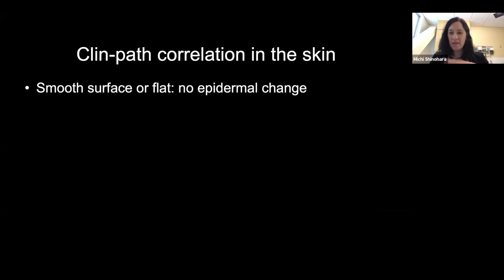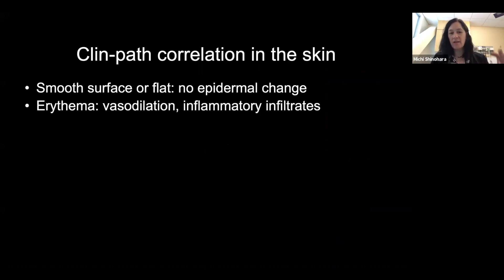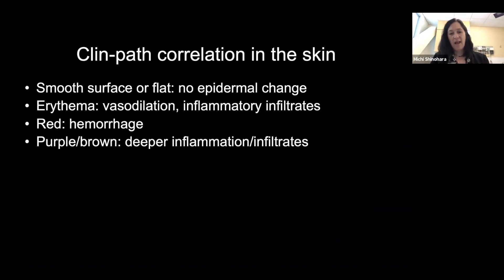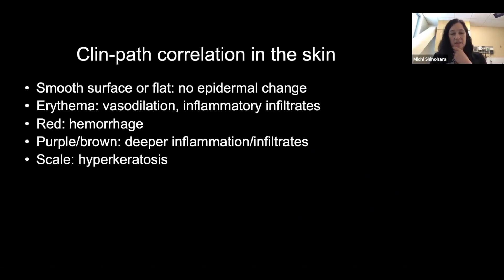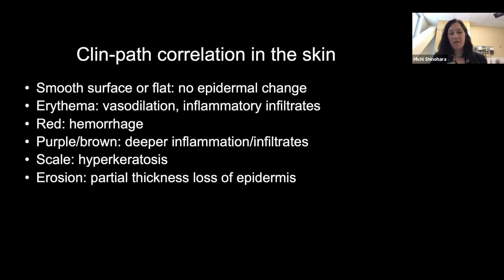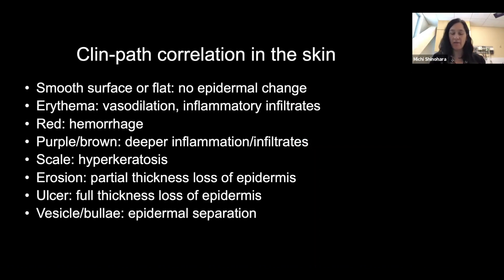When we clinically see something smooth or flat, that implies histologically we're not going to see any scale or very minimal epidermal change — something like urticaria. Erythema correlates with vasodilation or inflammatory infiltrates, so we're going to look a little harder for that. When people describe something as red or purpura, we should look for hemorrhage. When something is a purple or brown color, we're going to think more about deeper inflammation — maybe lichenoid or granulomatous. If they describe scale, we look for hyperkeratosis; if they describe an erosion, we look for partial thickness of the epidermis; an ulcer means full thickness; and a vesicle or bulla — obviously — we're going to see separation.